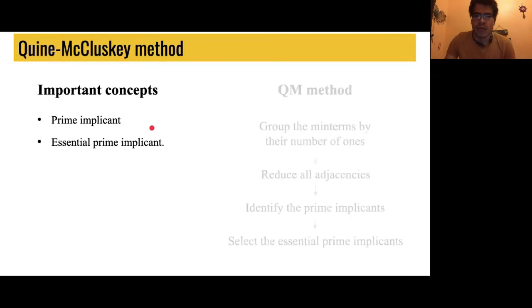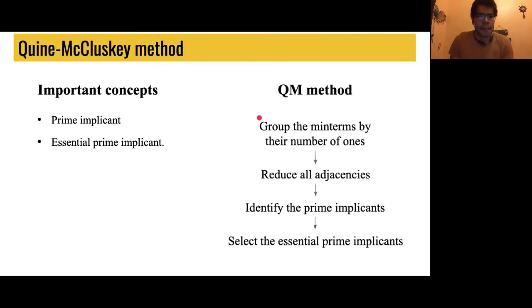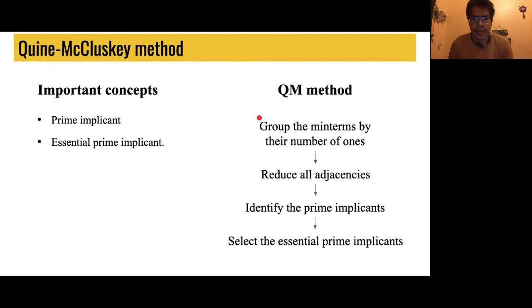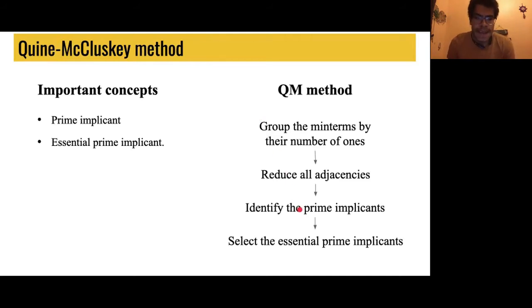The Quine-McCluskey is a simple algorithm. We only have to perform four steps. First, we organize the minterms of the function by their number of ones in their binary representation. These minterms are then combined to reduce all the adjacencies — terms that differ by a single bit are combined. Once there are no adjacencies, we identify the prime implicants, and finally we select the essential prime implicants to cover all the outputs of the function.